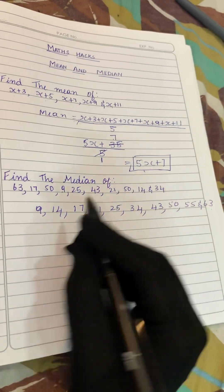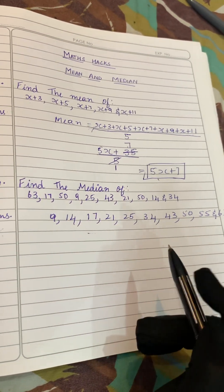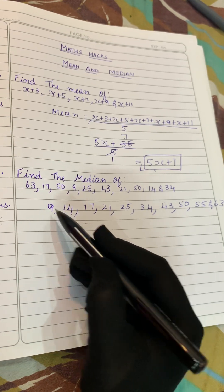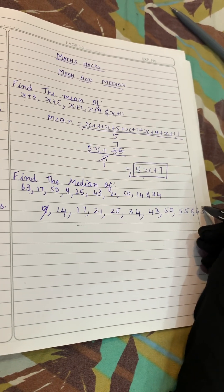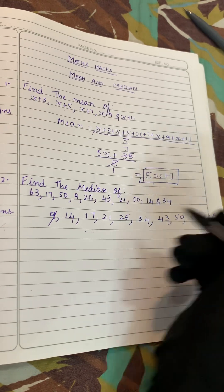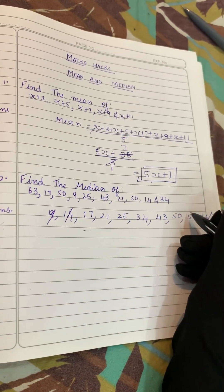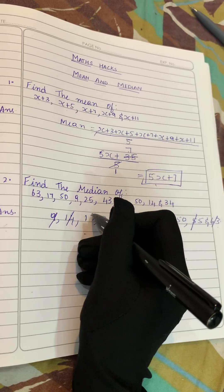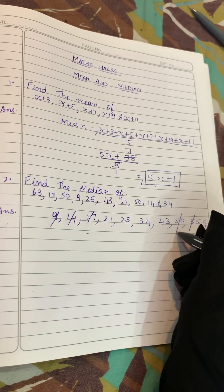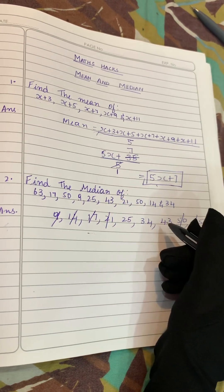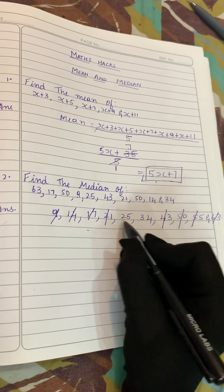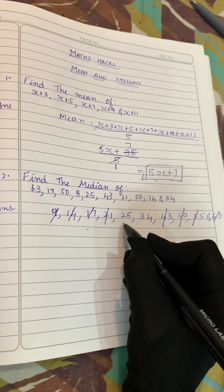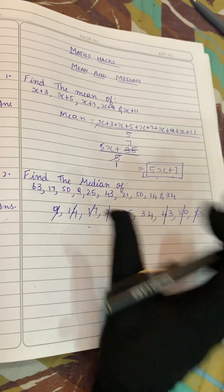Now we have to find out the middle value here. To find out the middle value, the easy thing is first let's cancel this and this. We'll cancel the pairs: 9 from here, 63 from here, 14 then 55, 17 then 50, 21 then 43. Now this is the middle value here. We have these two pairs, so this is one pair, 25 and 34.